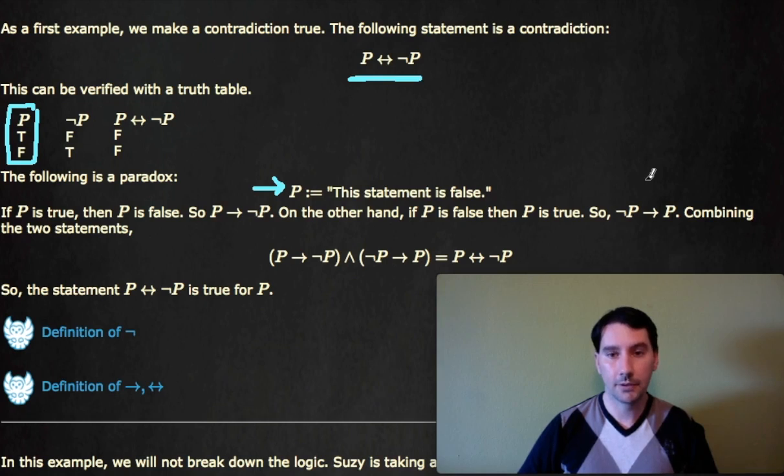On the other hand, if P is false, then it's true. Because if the statement is false, it's false, that means that P is true. And therefore, if not P, then P. And remember that P implies not P, and not P implies P is the same thing as saying P if and only if not P. So we've constructed an English statement that makes P if and only if not P true.